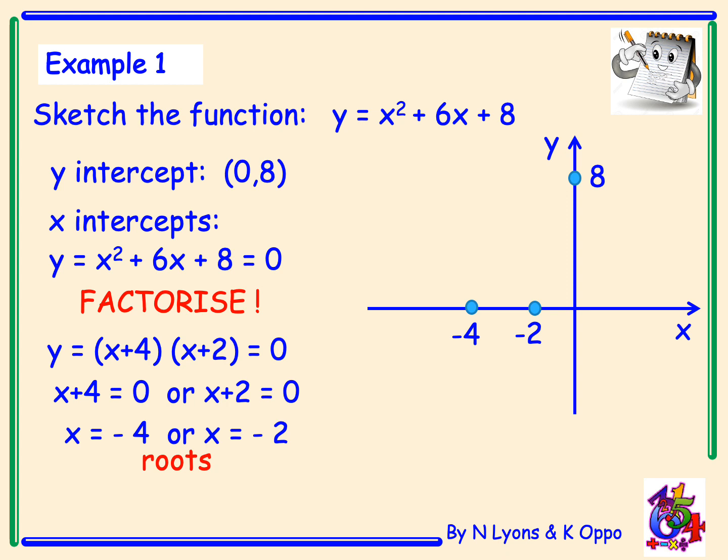Now before we can sketch this, we're going to have to consider the axis of symmetry. Now the axis of symmetry is always at the midpoint between the two roots. So the midpoint between -2 and -4, in this case, is the point x = -3. So it's a line, a vertical line, x = -3, denoting our axis of symmetry. It's along this line that we'll find our turning point.